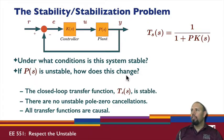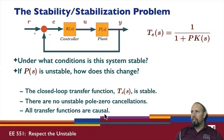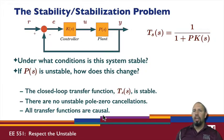If P is unstable, how does this change? We would want to design a controller so that the closed-loop transfer function — specifically the sensitivity function — is stable. This results in three conditions that determine internal stability: the sensitivity function is stable, there are no unstable pole-zero cancellations, and all transfer functions are causal. These three conditions together determine stability of the system.